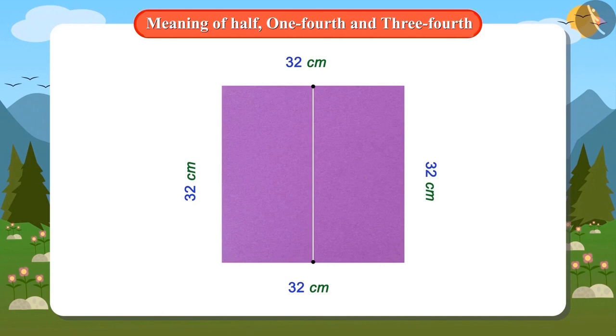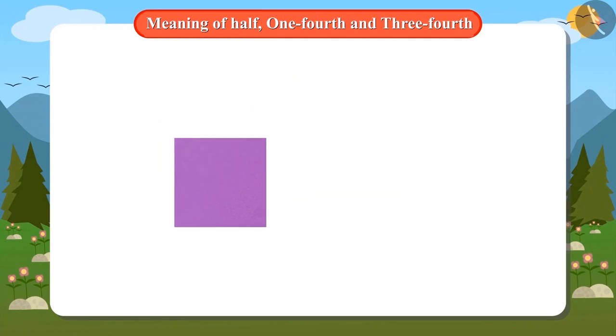Well, now I understand where I have made a mistake. Now I will divide this half into half. For this, I will draw a line by making half on its right and left side. Thus, this part will also be divided into two halves. This means that all the sides of the quarter of this cardboard will be 16 centimetres.